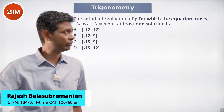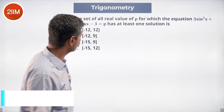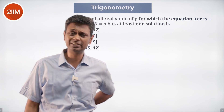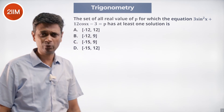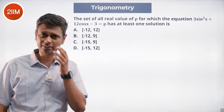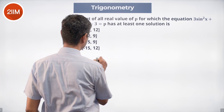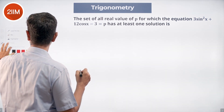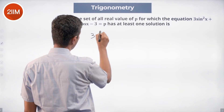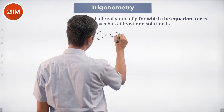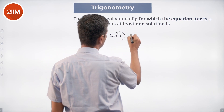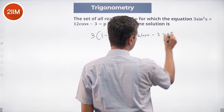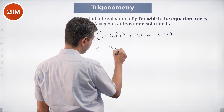A lovely, beautiful, challenging question. We have 3sin²x + 12cosx - 3 = p, which has at least one solution. Since we have both sin²x and cosx, I want to deal only with cosx, so we substitute sin²x = 1 - cos²x, giving us 3(1 - cos²x) + 12cosx - 3 = p, or 3 - 3cos²x + 12cosx - 3 = p.